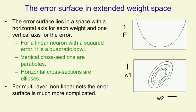So in this space, points on the horizontal plane correspond to different settings of the weights and the height corresponds to the error that you're making with that set of weights summed over all training cases.